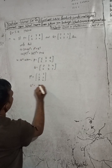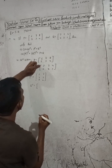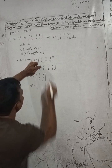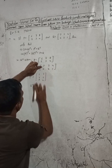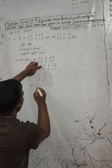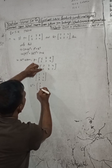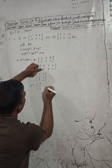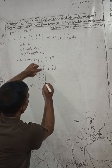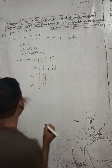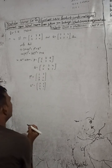Now Q transpose. Q transpose means interchange the rows into columns. The first row is [3 2 4], so make it the first column. The second row is [6 2 1], so make it the second column. Now we have both P transpose and Q transpose.